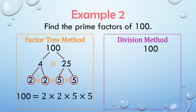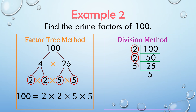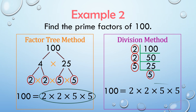Using the division method, we can divide 100 by the smallest prime number, which is 2. So 100 divided by 2 is 50. 50 can be divided by the smallest prime number, 2. So 50 divided by 2 is 25. 25 can be divided by the prime number 5. So 25 divided by 5 is 5. They are all now prime numbers. Therefore, the prime factorization of 100 is 2 times 2 times 5 times 5. We have arrived at the same answer.